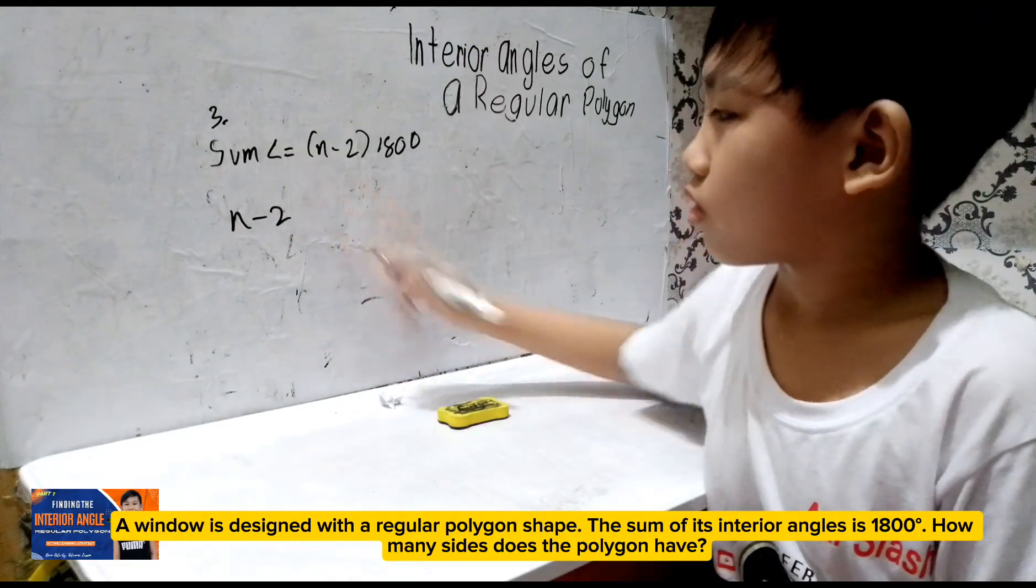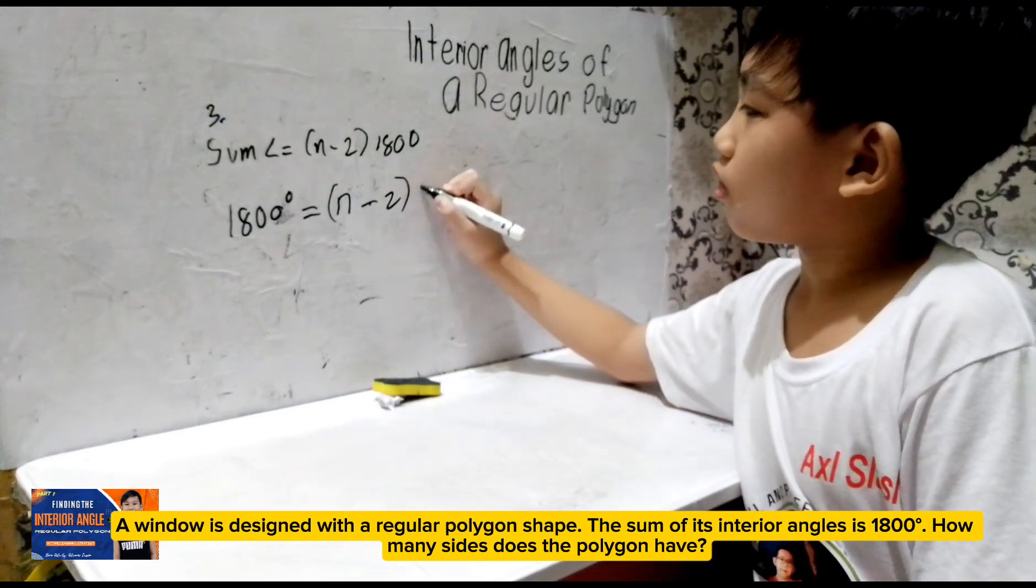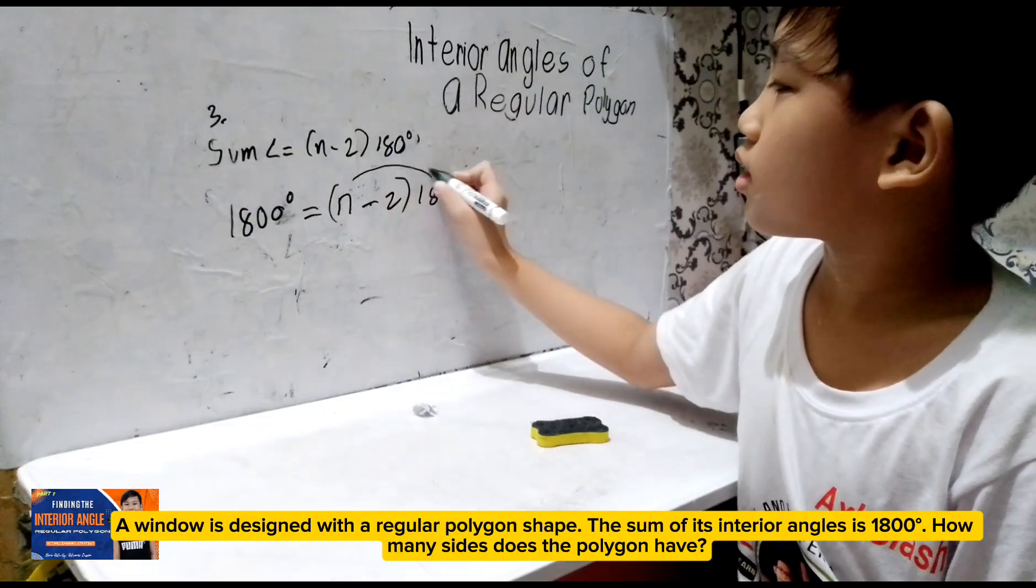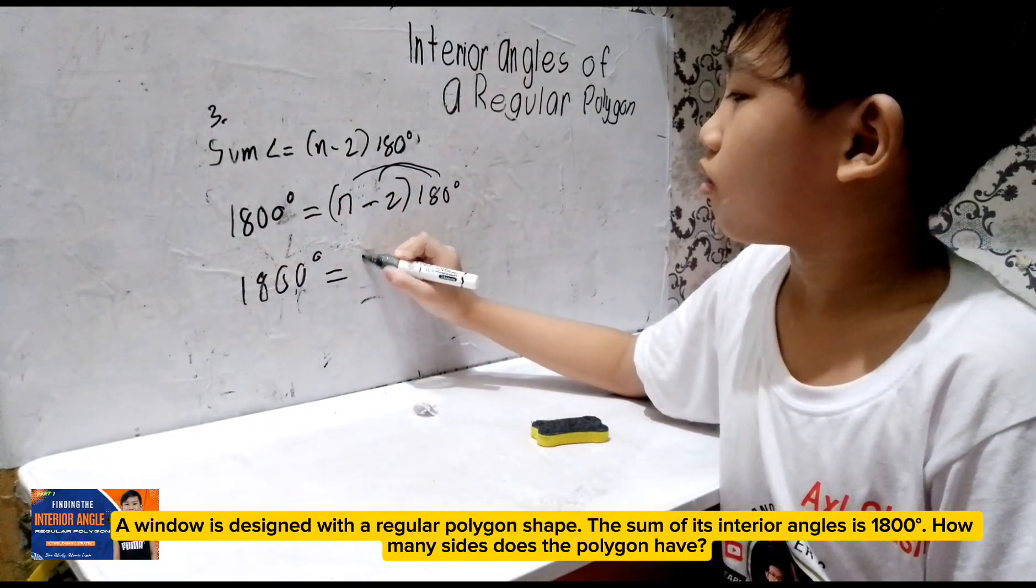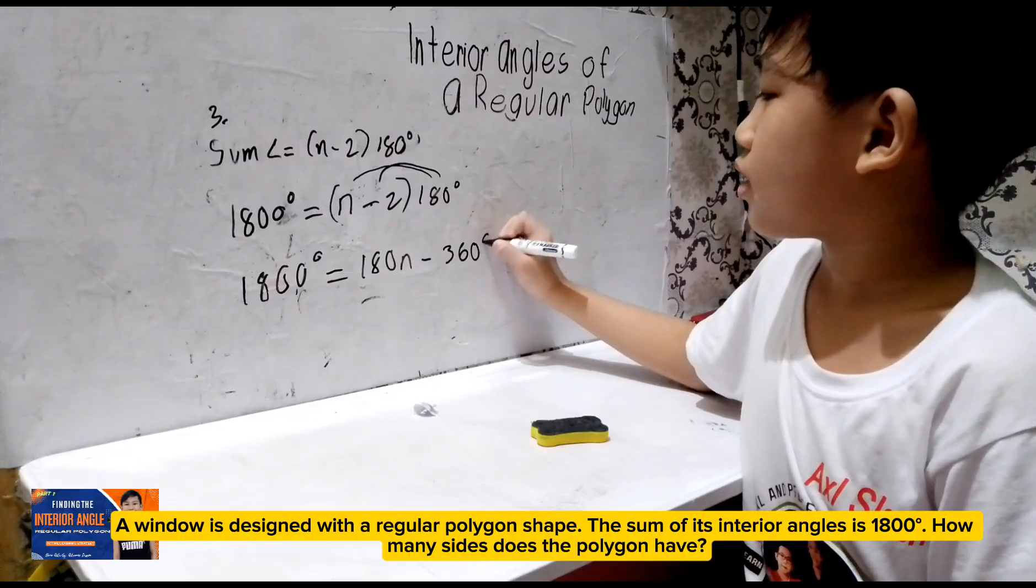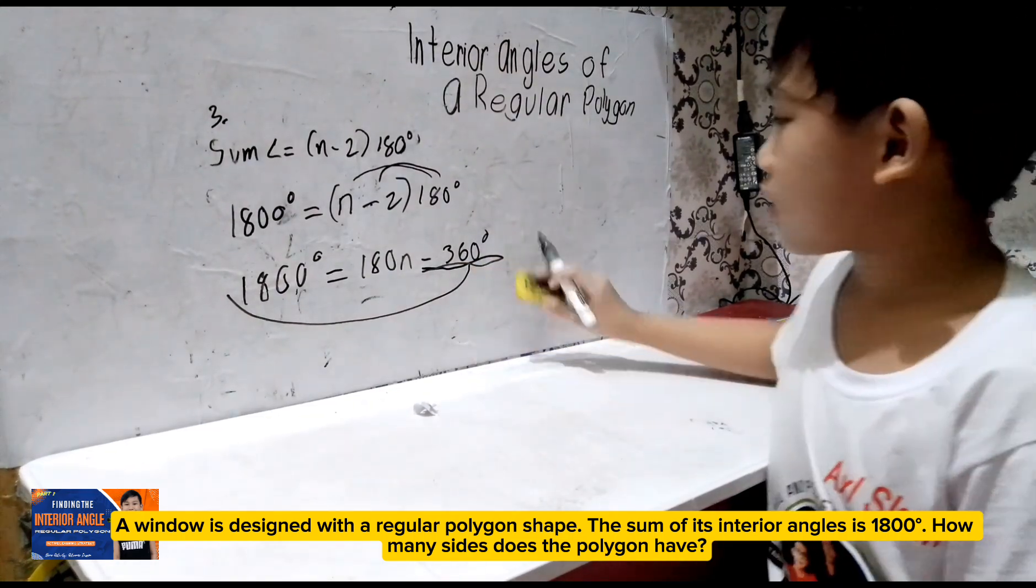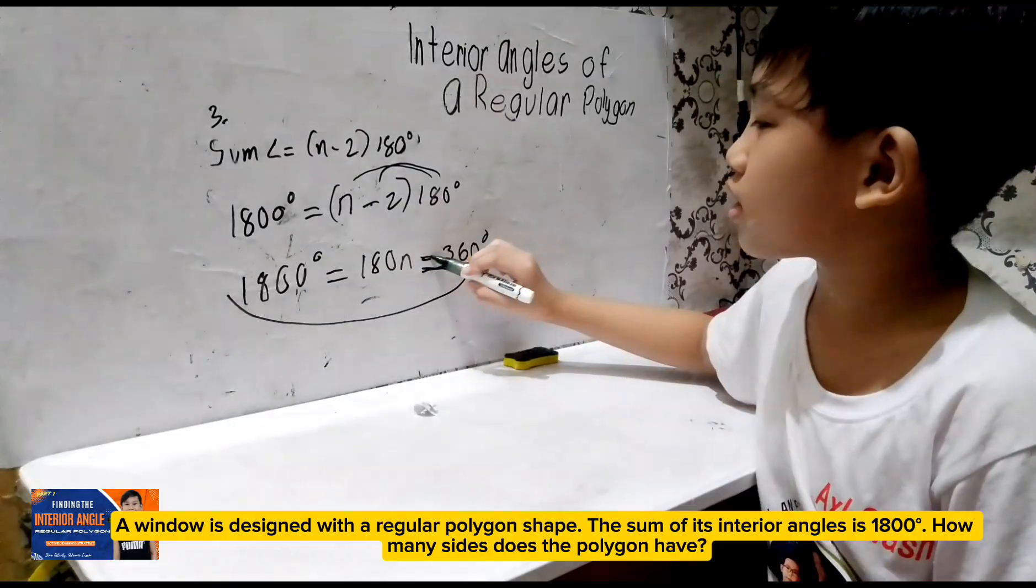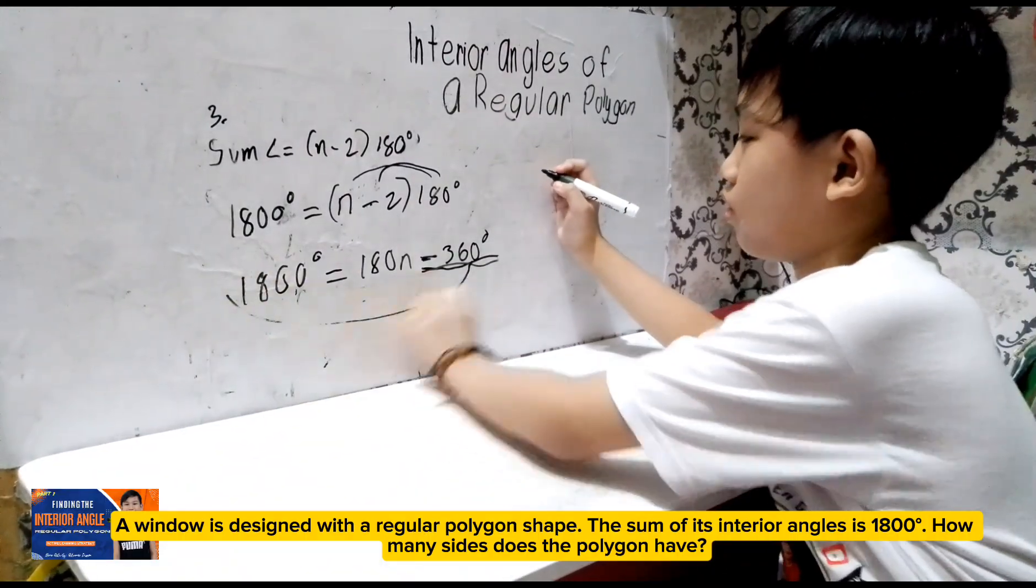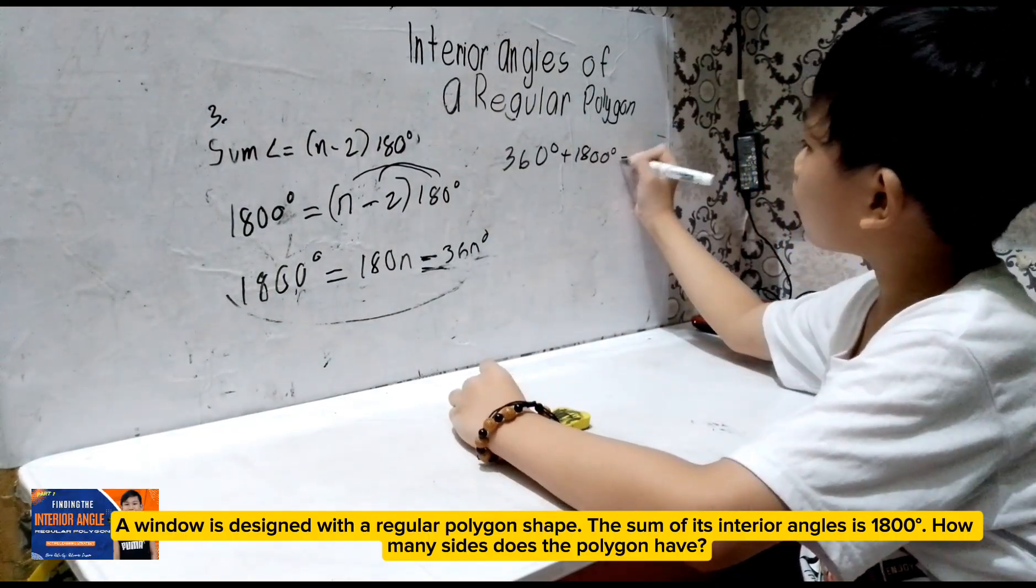Sum equals N minus 2 multiplied by 180 degrees. So, N minus 2. Let's replace sum. Since our sum is 1,800 degrees. So, N minus 2 multiplied by 180 degrees. And then let's substitute this 1,800. Not substitute. Distribute. Distribute. 180 N minus 360 degrees. Let's put here since. Transpose. Transpose. Since it's 9th, positive or negative. Since it's negative, when we transpose it here, it becomes positive. So, 360 degrees plus 1,800 degrees plus 180 N.